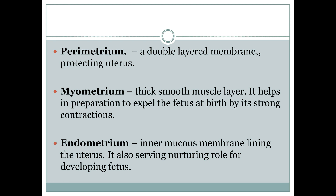Histologically, the uterus is composed of three tissue layers. The outermost layer is called the perimetrium. Then comes the myometrium in the middle, which is a thick smooth muscle layer that helps prepare the female body to expel the fetus at the time of birth through its strong contractions. The innermost layer is the endometrium, which is the inner mucous membrane lining the uterus.